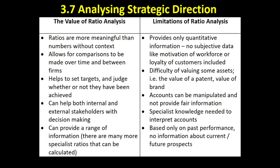We can judge a firm over time or compare it against competitors. If your return on capital employed is 12% but competitors are achieving 20%, that raises important questions. Ratios also help set clear targets — for example, benchmarking against an industry standard of 20% ROCE, you might set targets of 15% next year and 20% the year after.